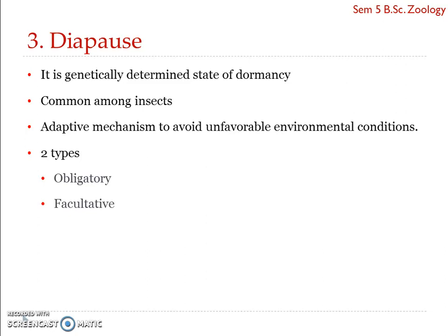Diapause is controlled and influenced both genetically as well as by hormonal functions. It is frequently associated with seasonal environmental conditions, and usually the organism enters diapause during the adverse period and breaks from it on the return of favorable conditions.